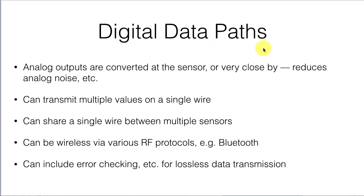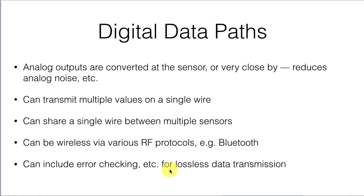The big advantage of going to digital data is that analog outputs are converted at the sensor, or really close to the sensor, and that reduces the amount of analog noise because there's just less wire and less hardware out there in an electrically noisy environment. You can transmit multiple values on a single wire using various data transfer protocols — sharing a single wire between multiple sensors — or you can even have wireless digital data using radio frequency transmission like Bluetooth, and you can include error checking for lossless data transmission.